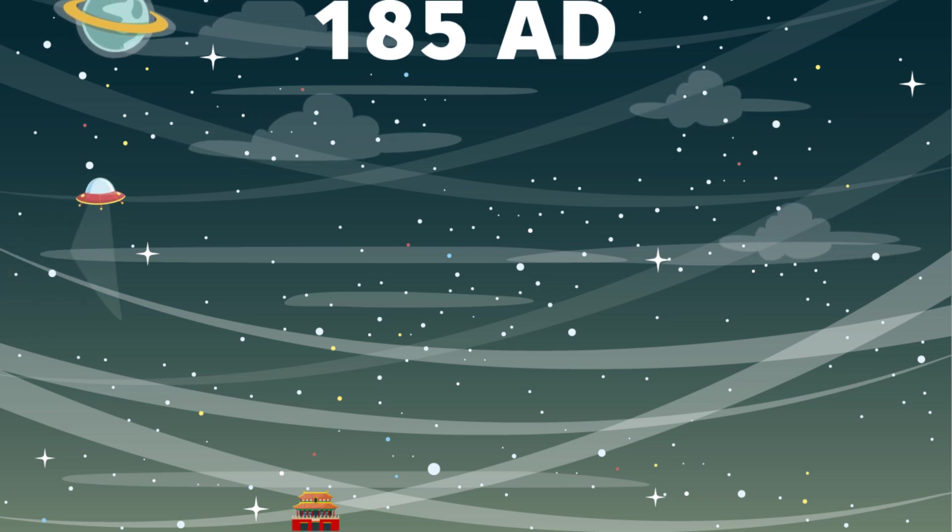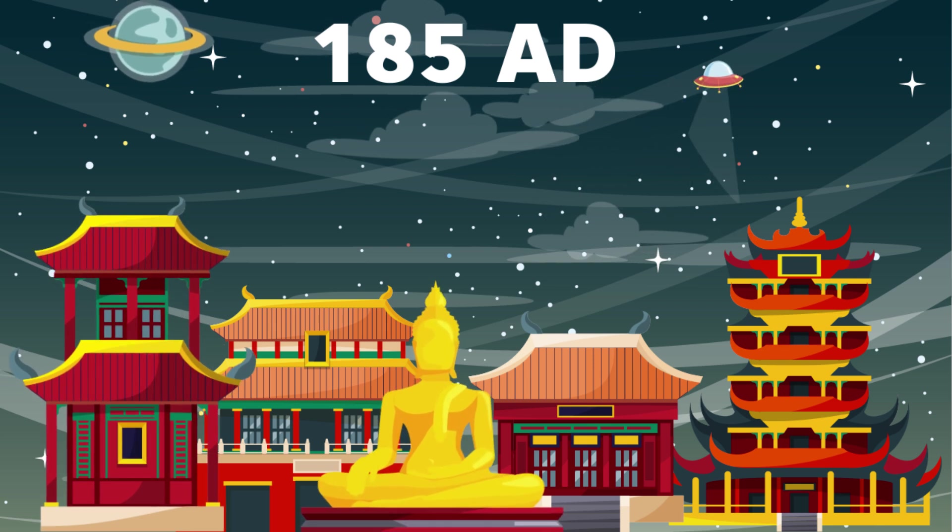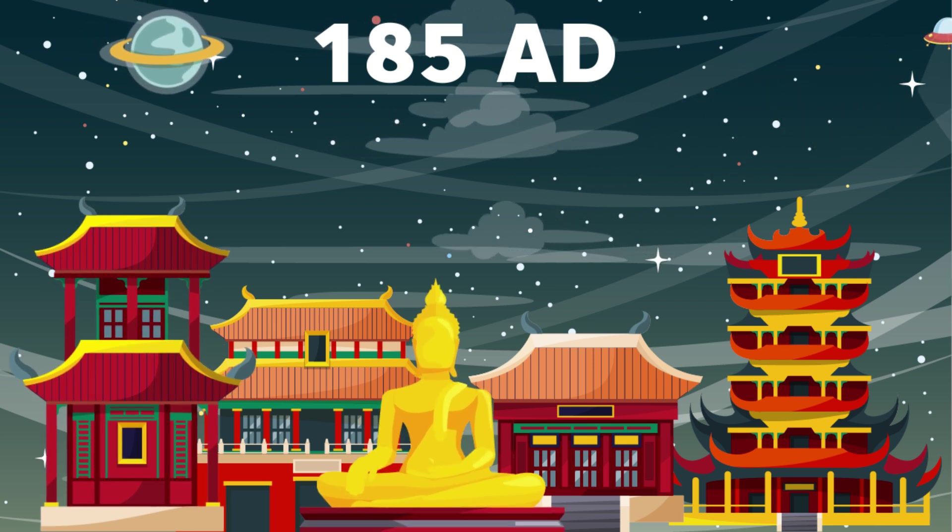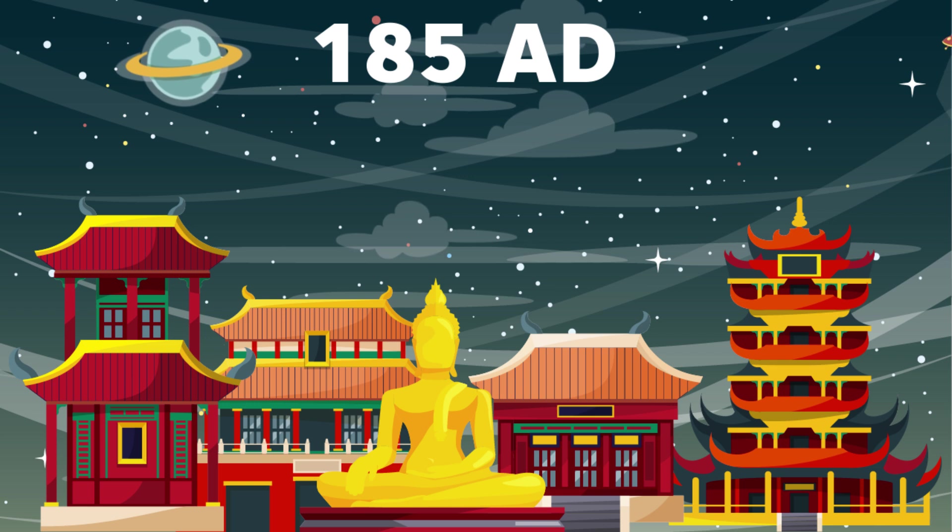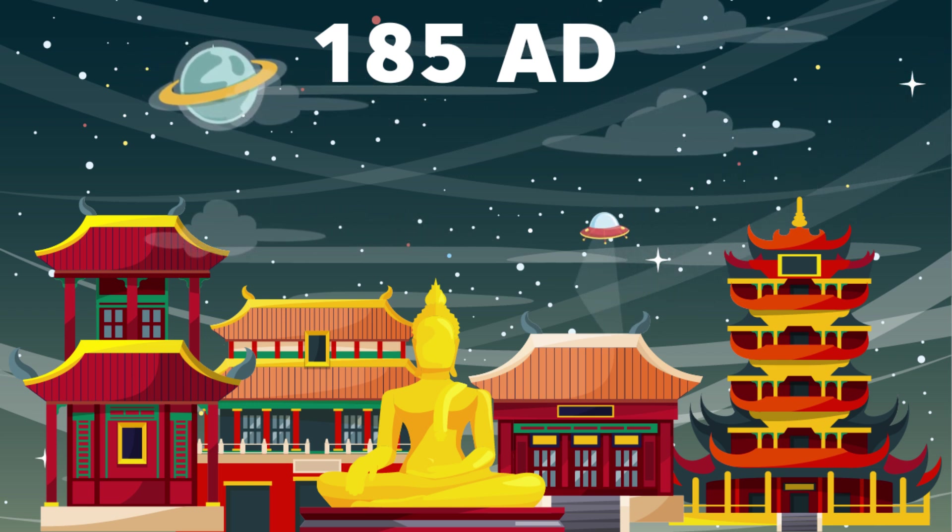In 185 AD, someone in China looked up in the sky and saw a new star. It sparkled and did not move, so it couldn't be a comet or an asteroid or spaceship. This new star stayed in the sky for 8 months and then disappeared forever.